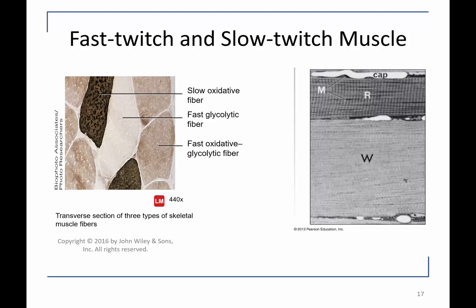On the left here we have a transverse section of a section of mammalian muscle. What we're seeing is slow twitch fibers, which are dark; fast twitch fibers, which are white or light; and some intermediate muscle fibers, which are actually hybrids of fast and slow called fast oxidative glycolytic. We refer to these muscles based on the speed at which they contract and the type of metabolism that they use.